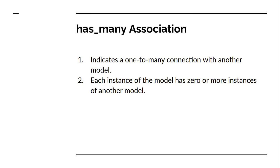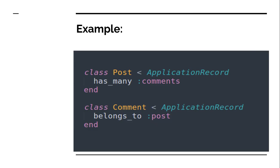So the model which defines has_many association can have zero or more instances of its child model. To understand this has_many association, let's look at an example. You can see the code snippet on the screen — we have two active record models, Post and Comment, where Post has defined has_many :comments and Comment belongs_to :post. We'll look at the belongs_to association in the next lecture, but we're using Post and Comment here for a better understanding.